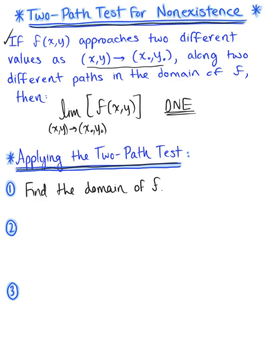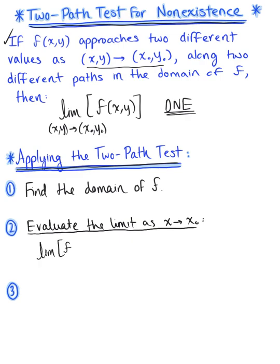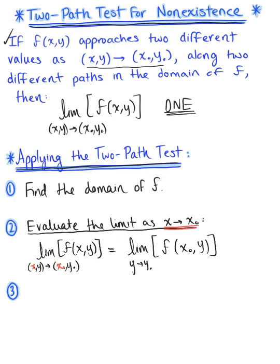After you find the domain, we then want to evaluate the limit as x approaches x-naught. We are going to hold that y variable fixed. So we have the limit of our function f(x, y) as the point (x, y) approaches (x-naught, y-naught), but we are evaluating as x approaches x-naught. This leaves us with the limit of the function f(x-naught, y), and now the limit is as y approaches y-naught. So when you evaluate the limit as x approaches x-naught, you plug that x-naught in, and you're left with a function of a single variable, y.